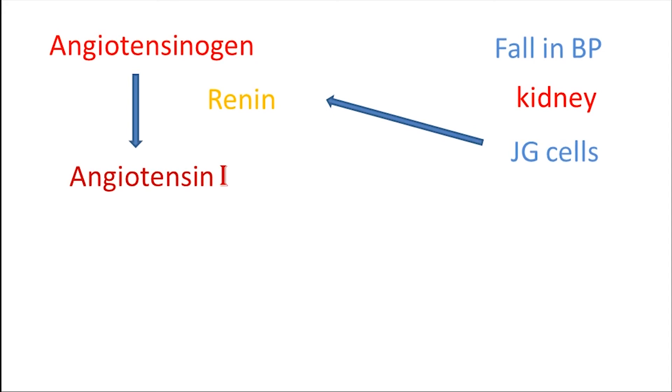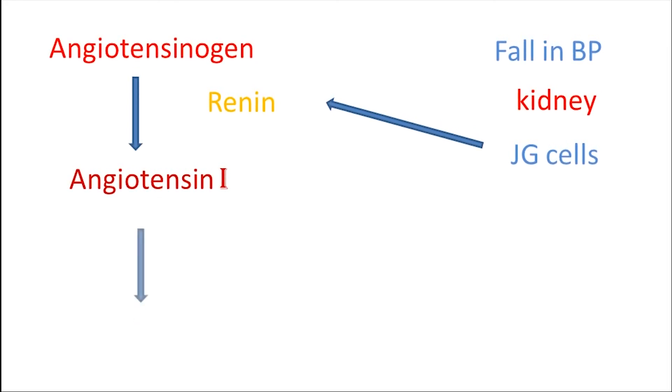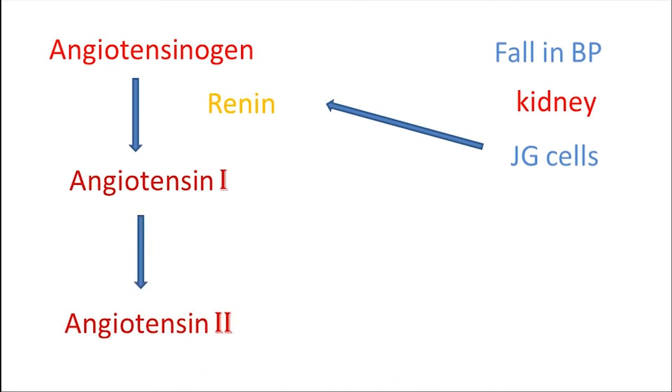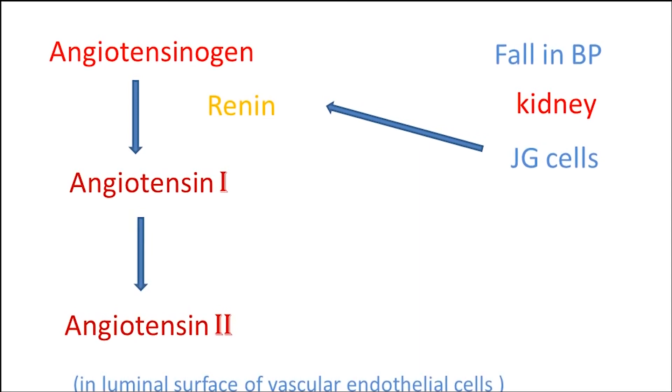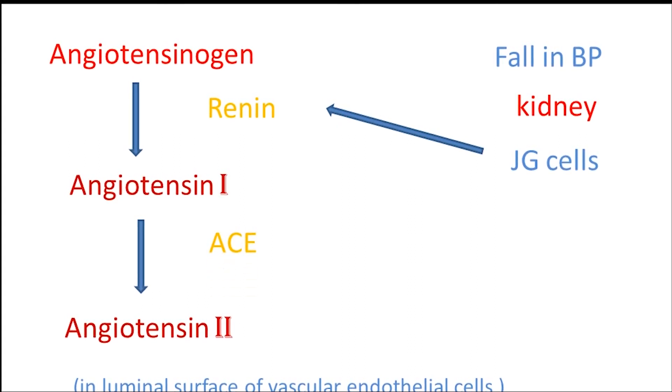Then there is another enzyme, angiotensin-converting enzyme (ACE). This angiotensin-converting enzyme converts angiotensin I into angiotensin II on the luminal surface of vascular endothelial cells.